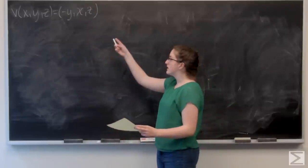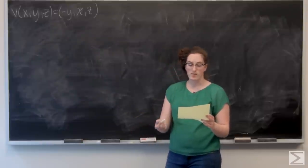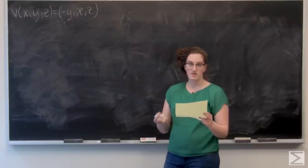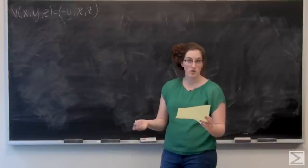All right, so in this problem I'm given a vector field V of x, y, and z, and the description of a surface M that I want to draw. So M is the right circular cylinder with no top or bottom, centered around the z axis of radius 5 between z equals negative 7 and z equals 7 oriented outward.